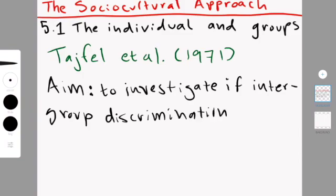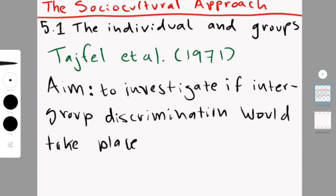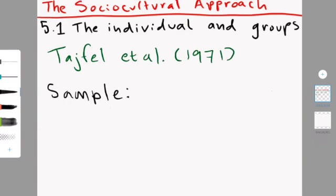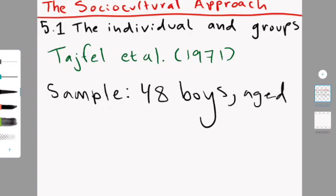The aim of this study was to investigate if intergroup discrimination would happen when you place participants into random groups. The sample used was 48 boys aged 14 to 15 and they were all from a British school.